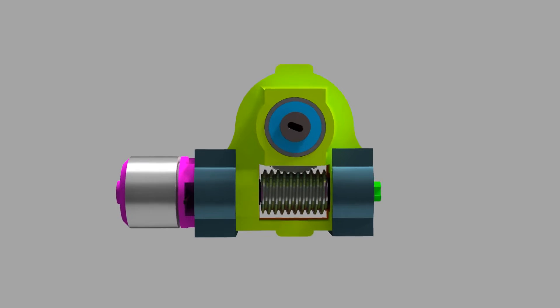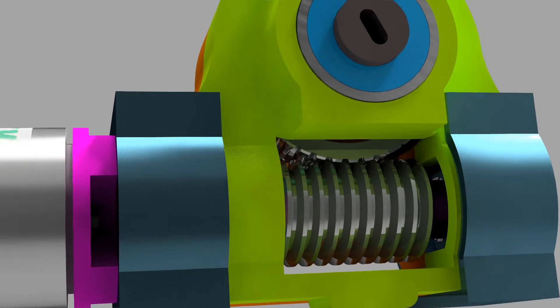This worm drive gearbox takes a high speed input and reduces it to a much lower speed and higher torque output.